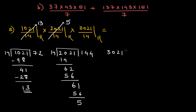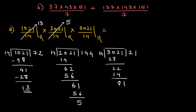Now dividing 3021 by 14. 14 times 2 is 28, giving 22. 14 times 1 is 14, leaving 8 and 1, then 81. Multiplying 14 by 5: 5 times 4 is 20, carry 2, giving 70. This leaves 11 as my remainder. So 3021 divided by 14 gives remainder 11.